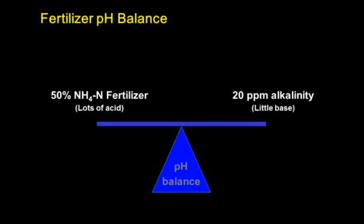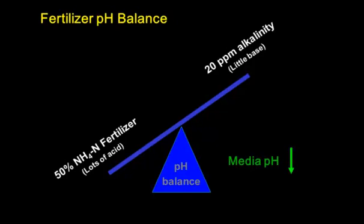Here's an example: a fertilizer that contains 50% ammoniacal nitrogen — that is a lot of acid — but used with water that only has 20 parts per million alkalinity, so very little base. If you use that fertilizer to grow a crop, there would be a tendency for the media pH to go down, because there's much more acid in the fertilizer solution than there is base.